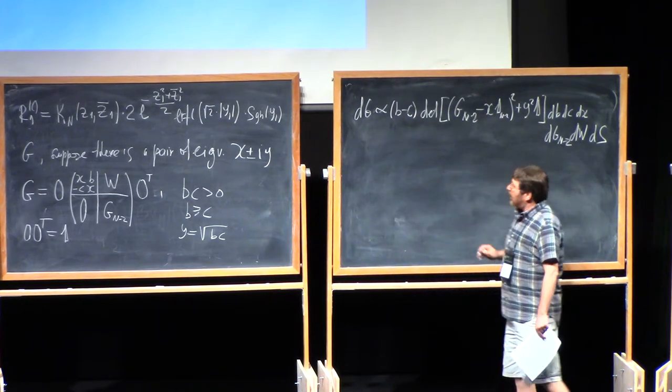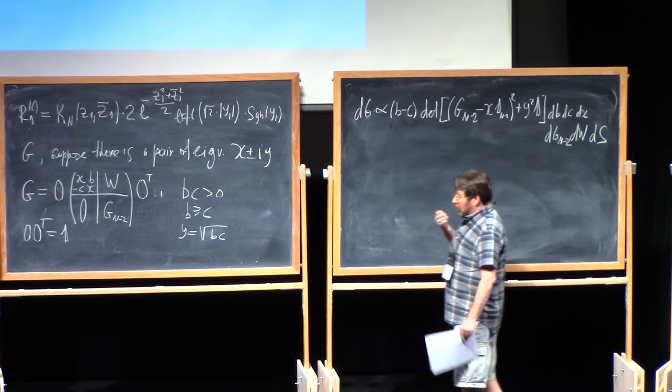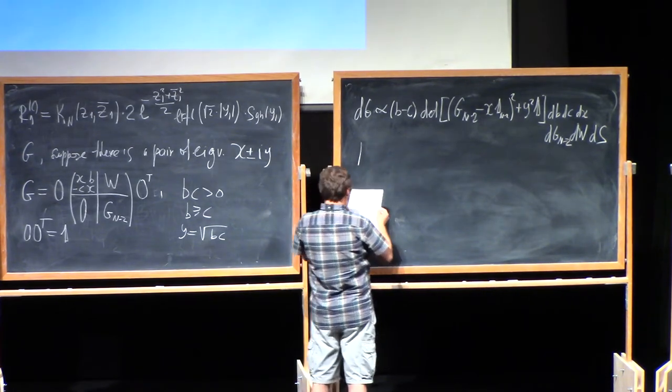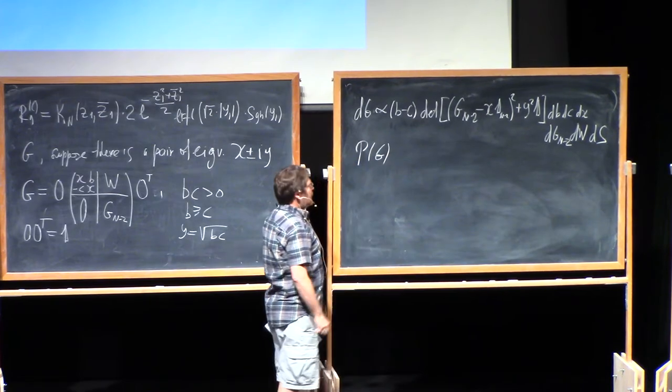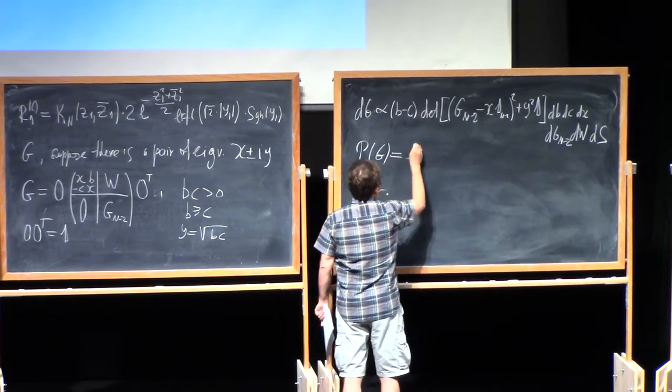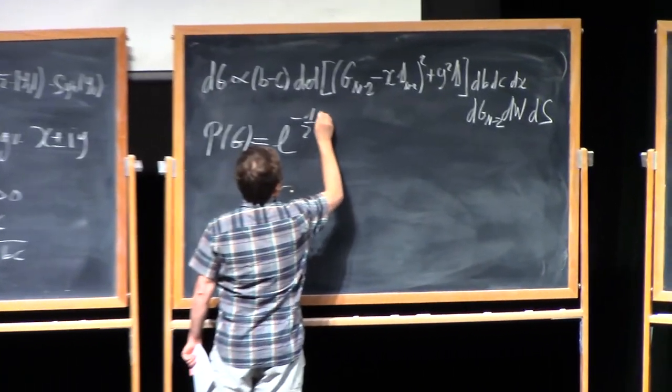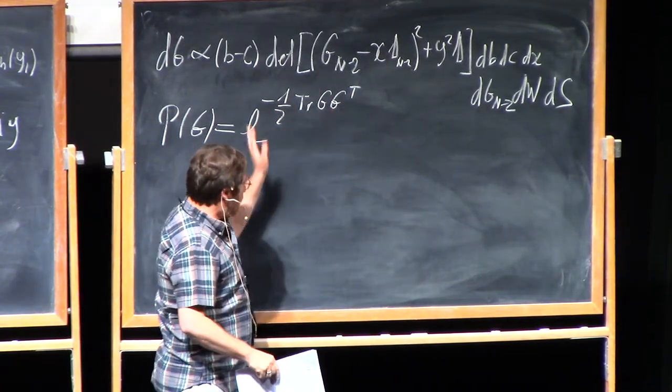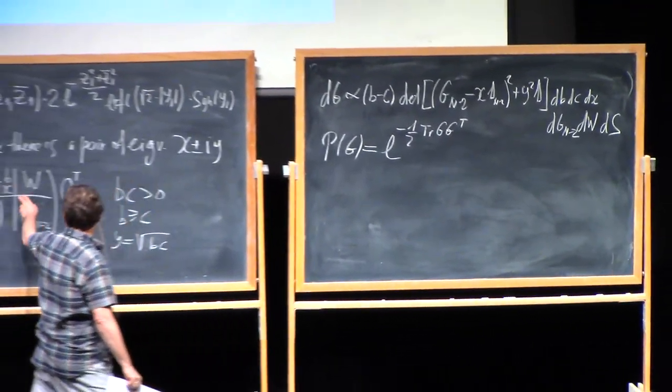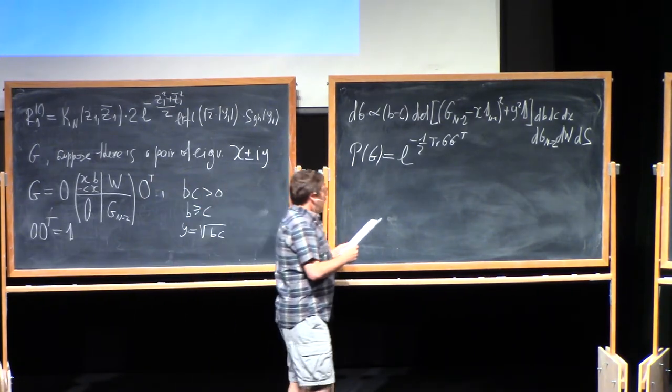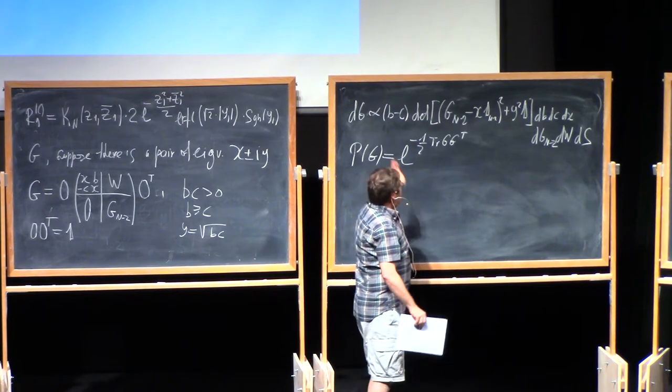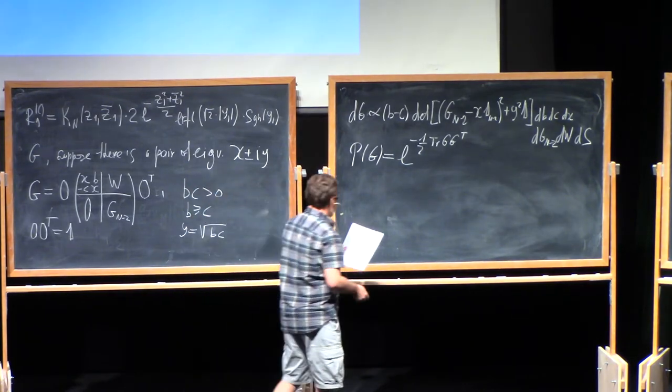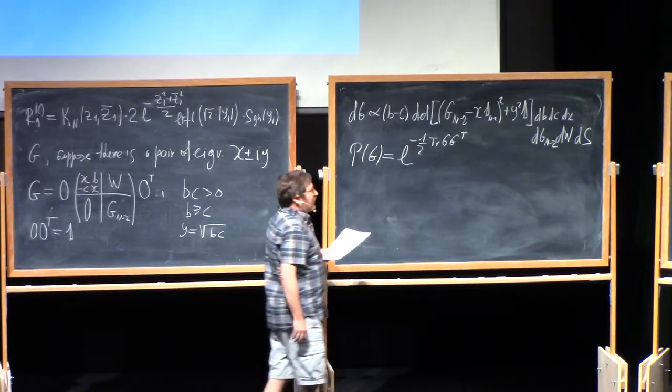I will write it, probably just suppress various constant factors and write only relevant part, b minus c. Then, determinant of g n minus 2, this block, minus x identity matrix of size n minus 2, squared plus y squared identity matrix. And now, differentials of all db, dc, dx.